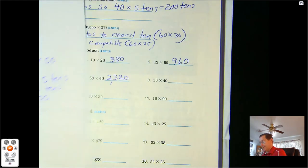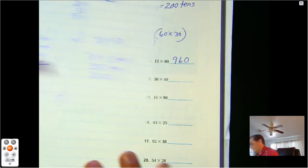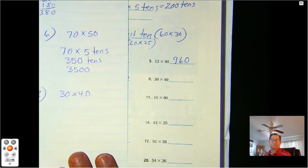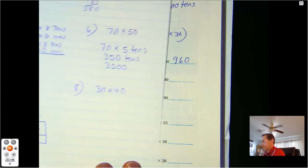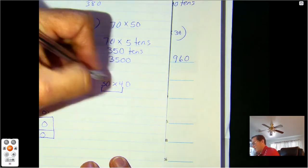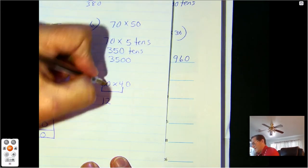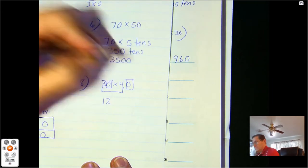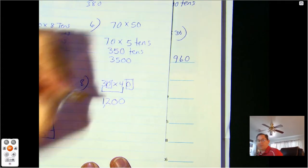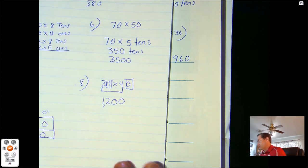Number eight. 30 times 40. This time, I'm just going to use the basic math fact and math patterns. 3 times 4 is 12. And I know there are two zeros in both of my factors. So there must be two in my product. So 1,200.